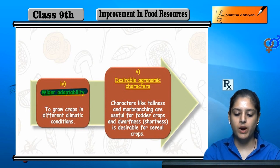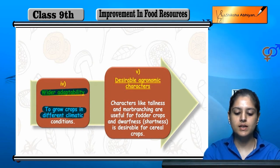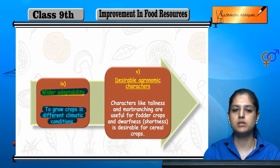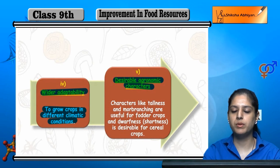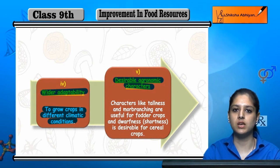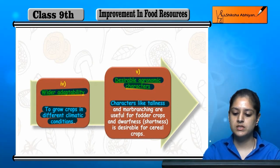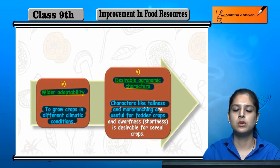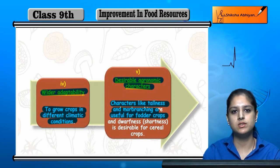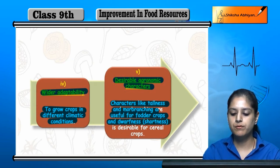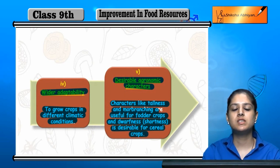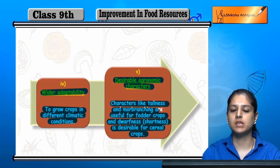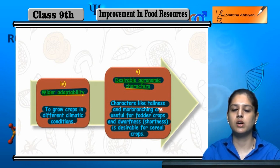Next is wider adaptability, meaning crops can grow under different climate conditions. There are also desirable agronomic characters: tallness and more branching are useful for fodder crops, while dwarfness — shortness — is important for cereal crops. These desired characteristics come from hybridization and variety improvement.